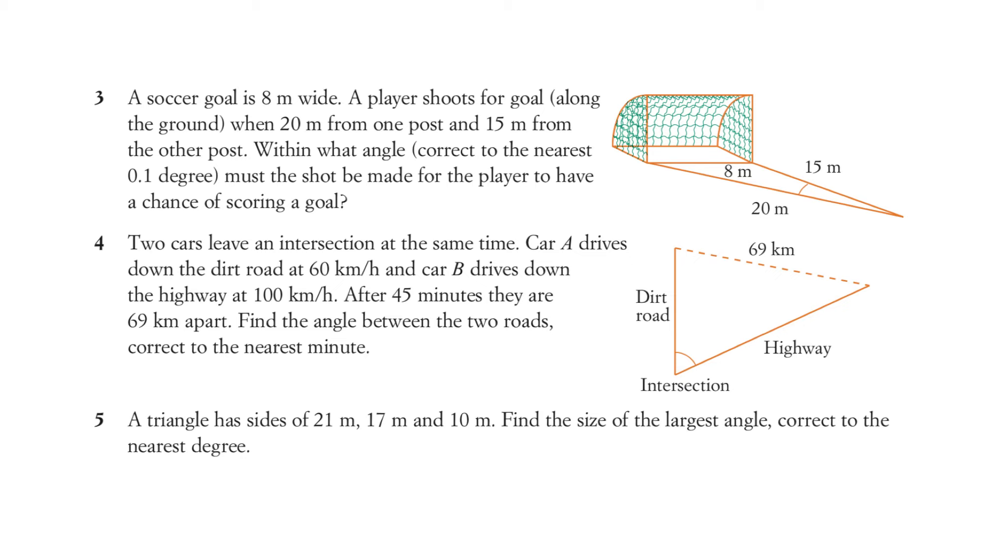Let's see how we could find out those lengths. Two cars leave an intersection at the same time. Oh, there we go. Car A drives down the dirt road at 60 kilometres an hour and car B drives down the highway at 100 kilometres an hour. So that's 60 kilometres an hour, and this car is going 100 kilometres an hour, and after 45 minutes they are 69 kilometres apart.